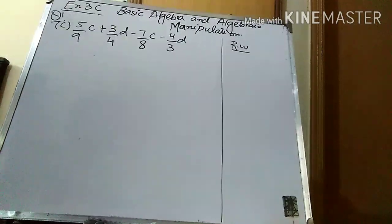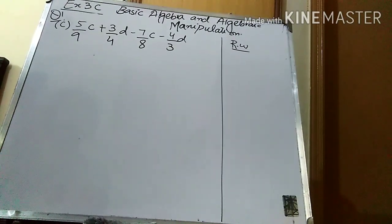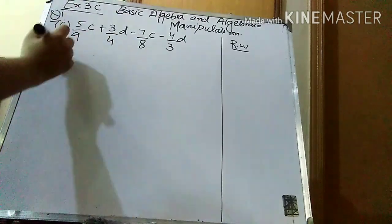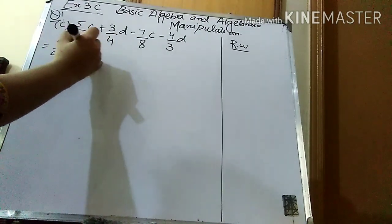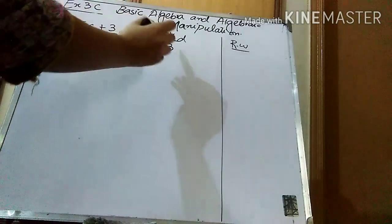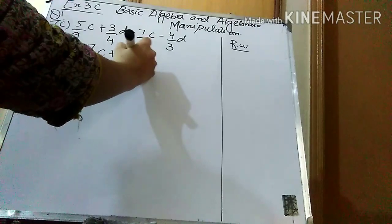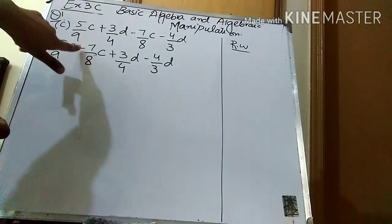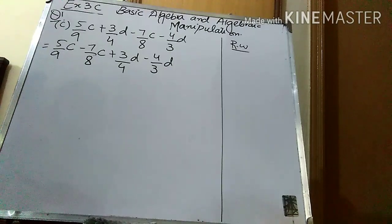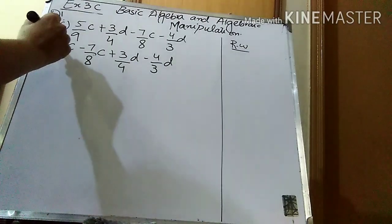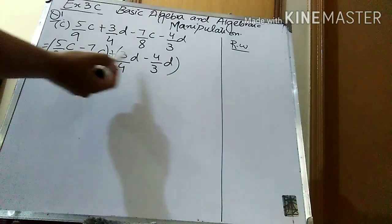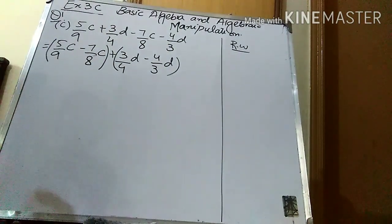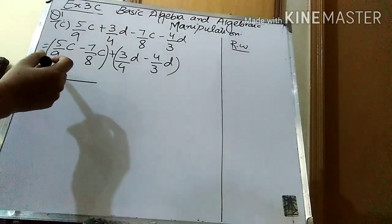Now let's come to part c. Part c is 5/9c + 3/4d − 7/8c − 4/3d. The very first step is to write like terms together. This is a c term and this is a c term — both are like terms — so I write them together. In the same way I write d terms together: + 3/4d and − 4/3d. We can put brackets to separate them because we can only solve like terms together.